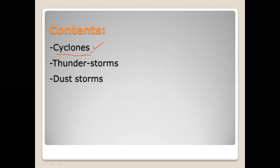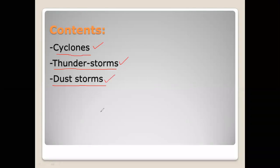Then we will discuss what thunderstorms are, how they are produced, and how they affect certain regions. Then we will discuss dust storms — what they are, how they are produced, and where they occur mostly.